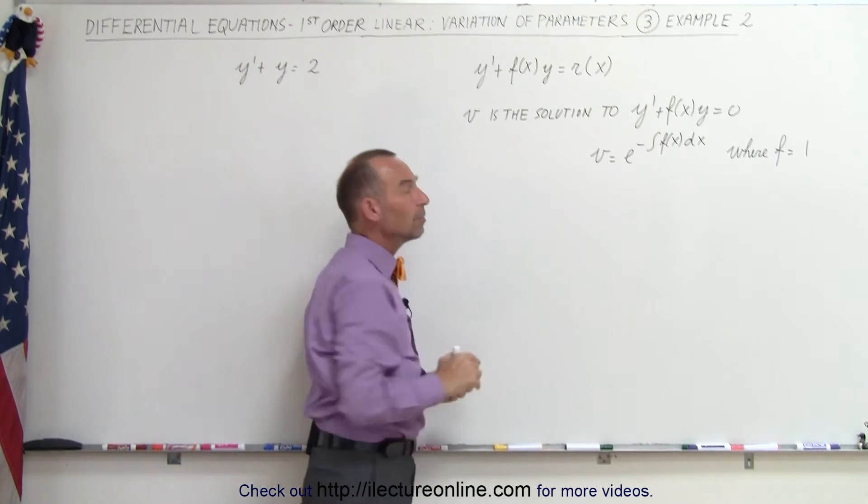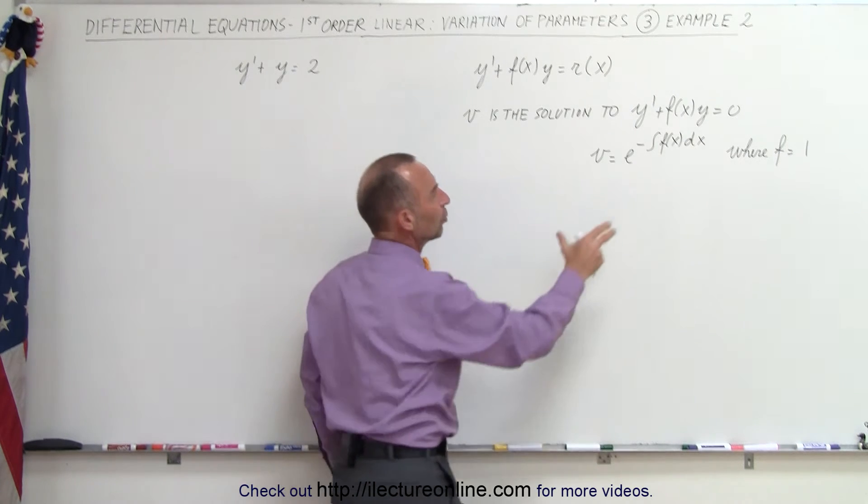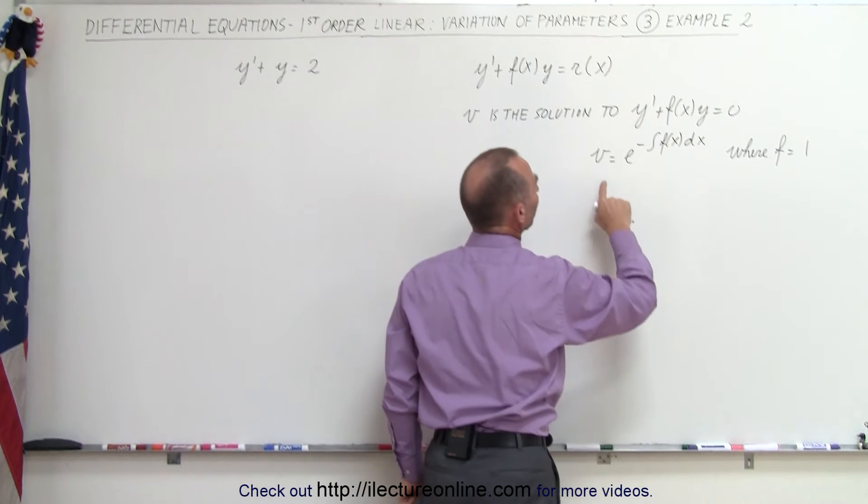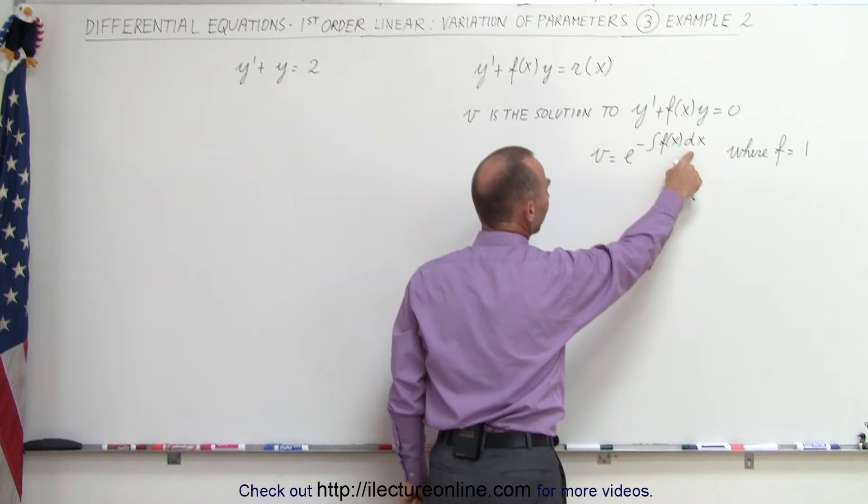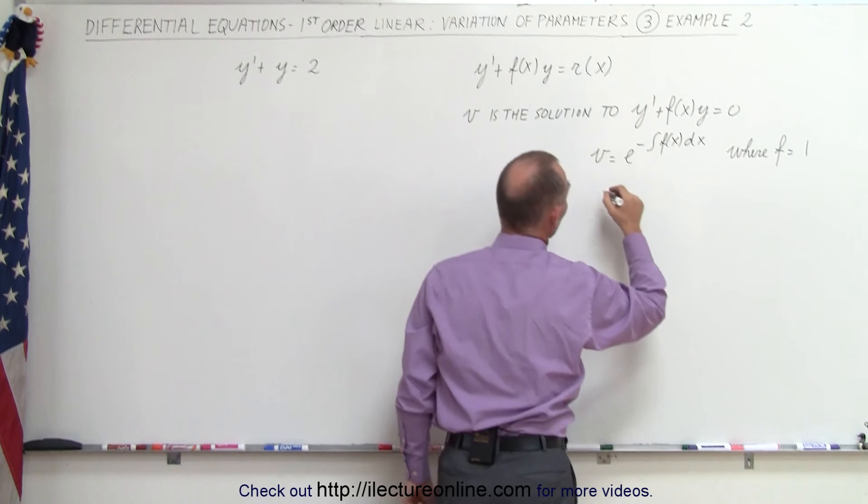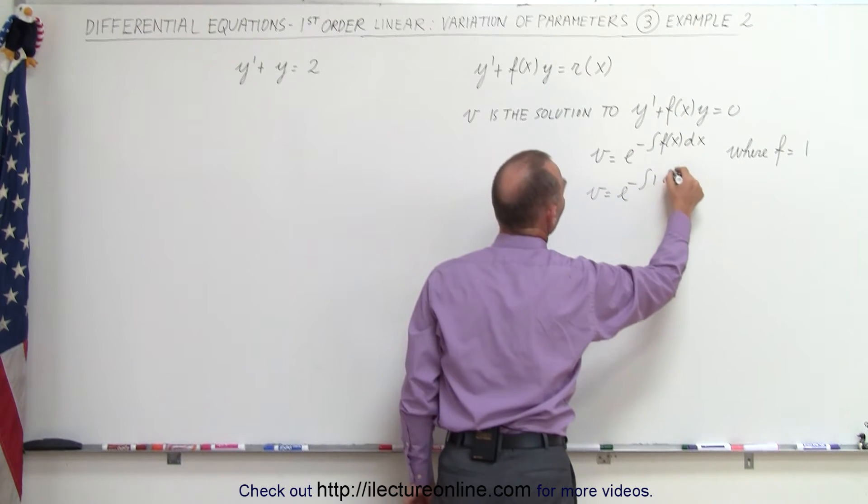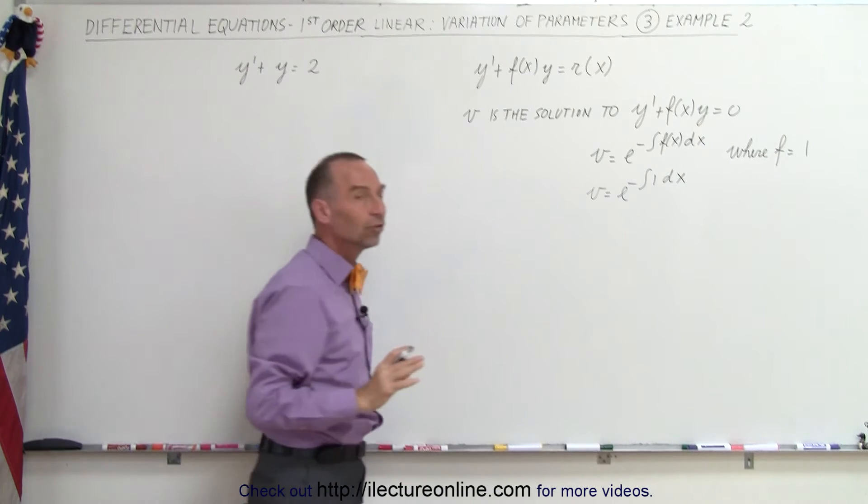Now v can be considered the solution to the homogeneous part of the equation. This would be the homogeneous part of the equation. So in this case, v is equal to e to the minus integral of f of x dx. In this case, f of x is equal to 1. So we know that v is equal to e to the minus integral of 1 times dx.